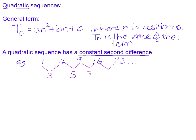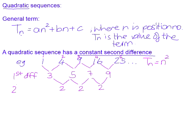If we want to go from 16 to 25, we need to add 9. This is actually the pattern of just the position number squared: 1 squared is 1, 2 squared is 4, 3 squared is 9, 4 squared is 16, 5 squared is 25. We can see that the first difference of the terms is not constant. But if we find the difference of the differences — the difference between 3 and 5 is 2, between 5 and 7 is 2, and between 7 and 9 is 2 — that second difference is constant. Finding the constant second difference is actually the test for a quadratic sequence.